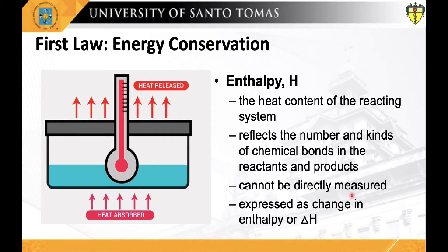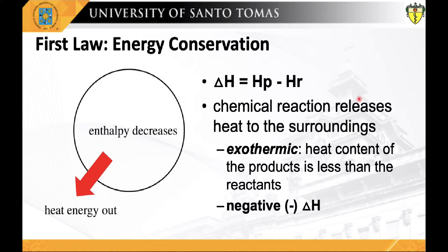In practice, a change in the enthalpy, or delta H, is the preferred expression for measurements at constant pressure because it simplifies the description of energy transfer. When matter transfer into or out of the system is also prevented, the enthalpy change equals the energy exchanged with the environment by heat. Change in enthalpy is measured as the difference in the energy content of the products in relation to the reactants, computed as the enthalpy of the products minus the enthalpy of the reactants.